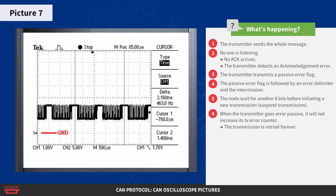So what you see in the picture is the message being transmitted, followed by a small pause which is the sum of the error flag, the error delimiter, the intermission, and the suspend transmission. The message is then retransmitted, and retransmitted, and retransmitted.